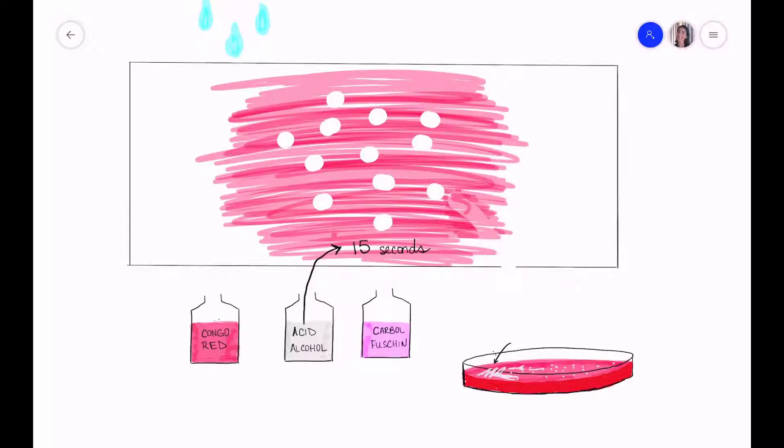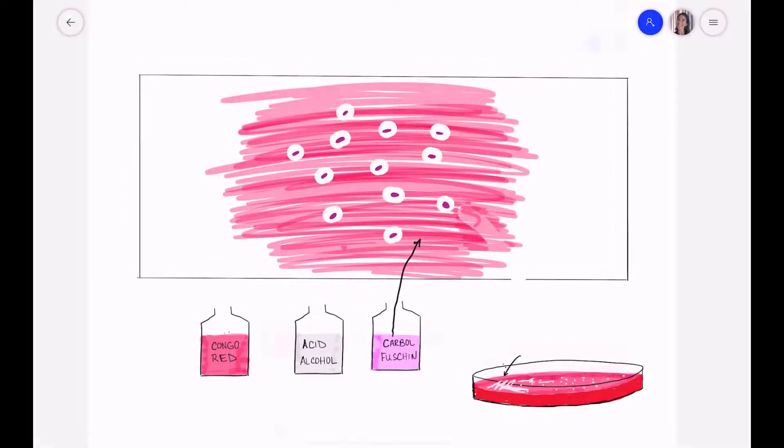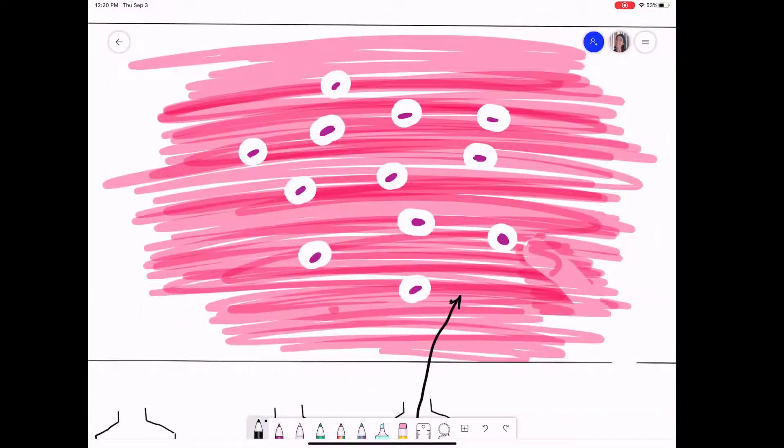Next we're going to apply a counter stain. The counter stain is Carbofusion. Carbofusion will stain the vegetative cells kind of a dark pink. So now what we're going to do is take a look at our slide under a microscope and what we'll see is this.